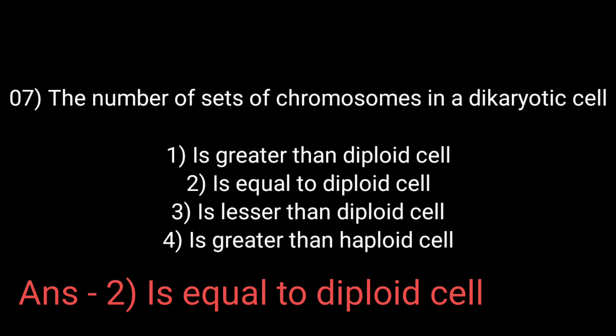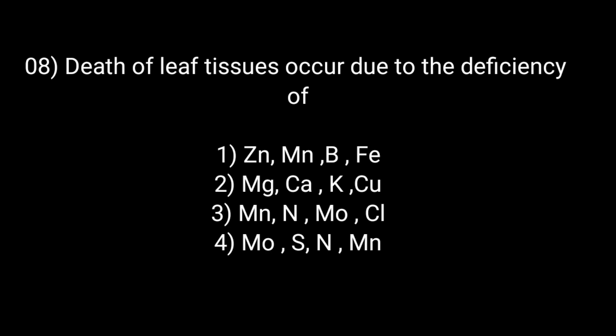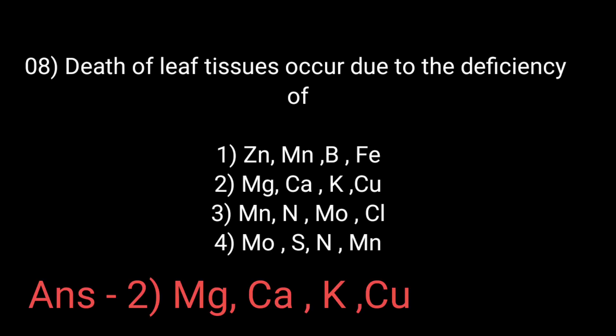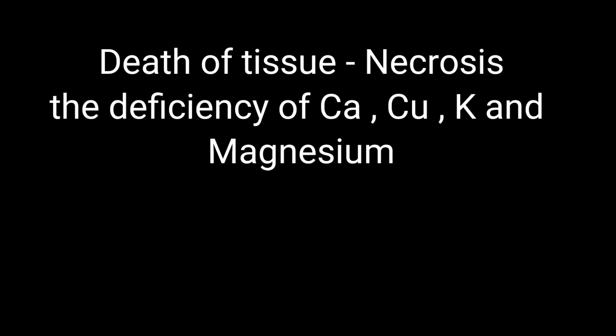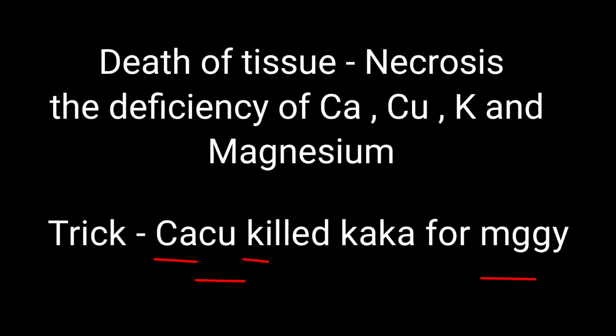Death of leaf tissues occurs due to deficiency of which elements? Option 1: Zinc, Magnesium, Boron, Iron; Option 2: Magnesium, Calcium, Potassium, and Copper; Option 3: Magnesium, Nitrogen, Molybdenum, Chlorine; Option 4: Molybdenum, Sulphur, Nitrogen, and Magnesium. The answer is Option 2: Magnesium, Calcium, Potassium, and Copper. Death of tissue, that is necrosis, is caused by deficiency of Calcium, Copper, Potassium, and Magnesium. The mnemonic to remember is: 'Kaku killed Kaka for Maggie.'